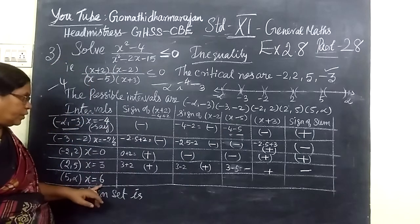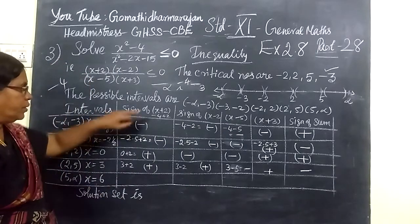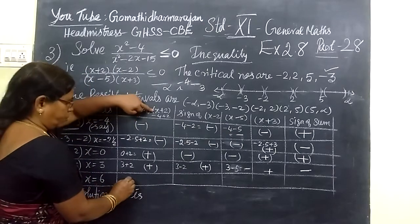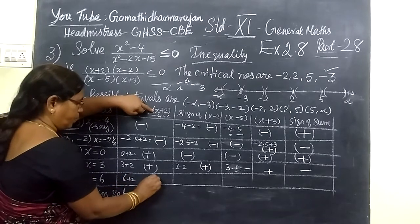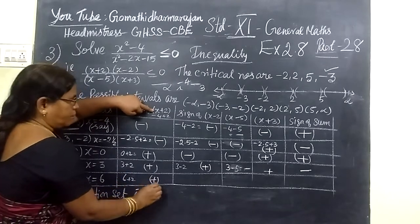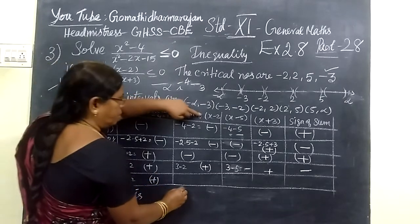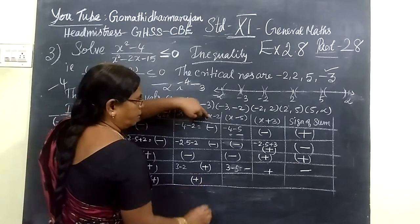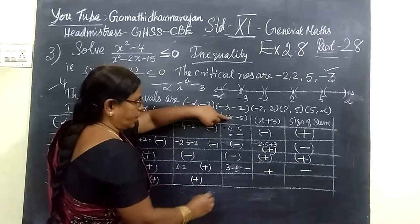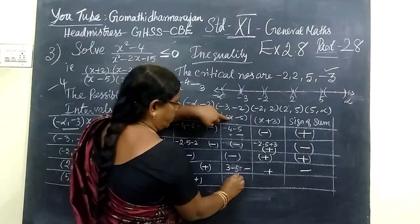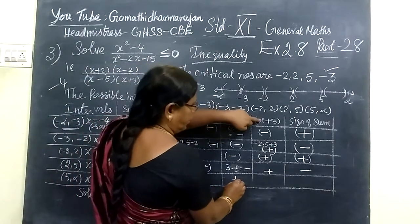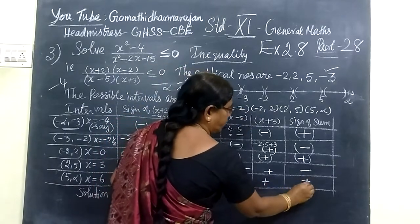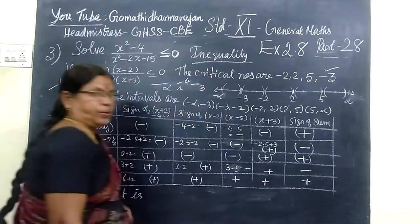After that, x is equal to 6. (6 + 2) gives plus; (6 - 2) gives plus; (6 - 5) gives plus; (6 + 3) gives plus. All of them are plus, so the result is a positive number.